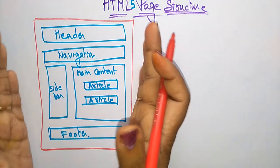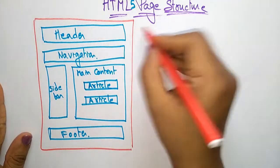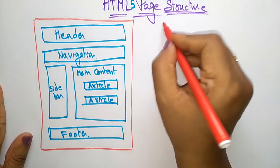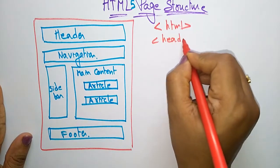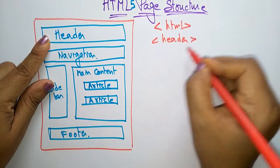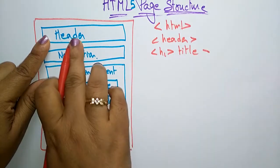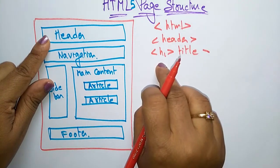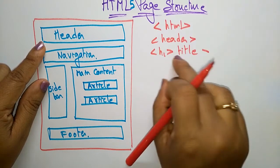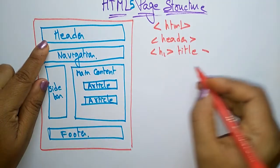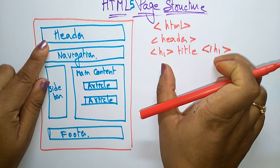To construct this type of page, the syntax starts with the HTML tag. Next, write the header. For the header, use the h1 tag — write the title in between the h1 tag, so the title appears in a big font size on the header. Close the h1 tag with a forward slash.